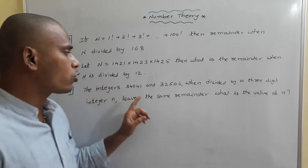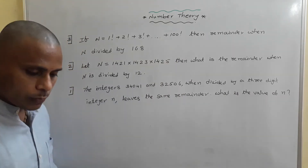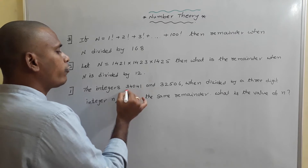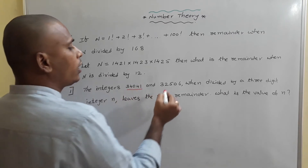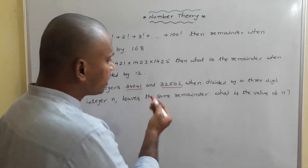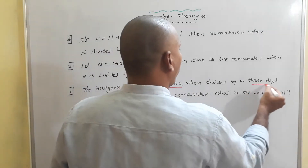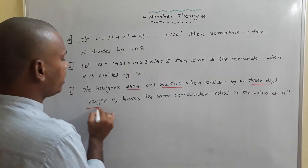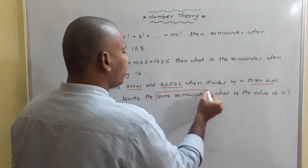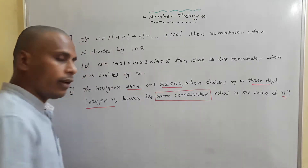First of all, I am going to solve the first problem, then 2 and 3. Just read out this particular problem. The integers 34,041 and 32,506, when divided by a three-digit integer n, leave the same remainder. We need to find out the value of n.